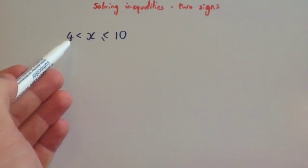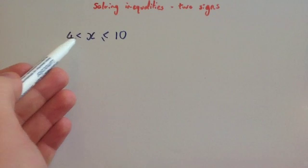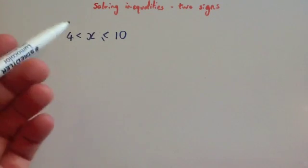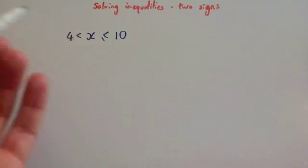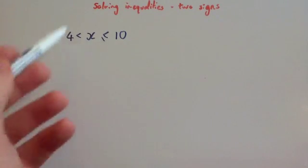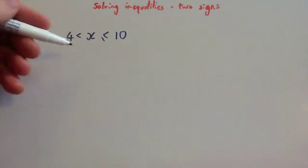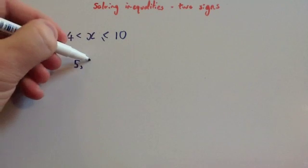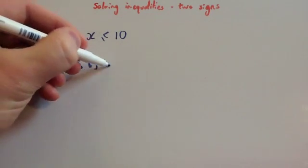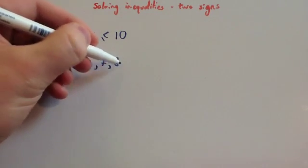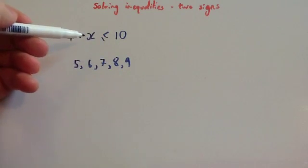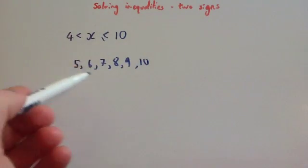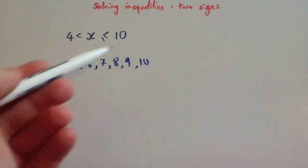Here you've got that x is larger than 4 but less than or equal to 10. The integers — the whole numbers — that would satisfy this inequality would be what's bigger than 4: so 5, 6, 7, 8, 9. And since it's less than or equal to 10, it could also be 10. So these are the integers that would satisfy this inequality.